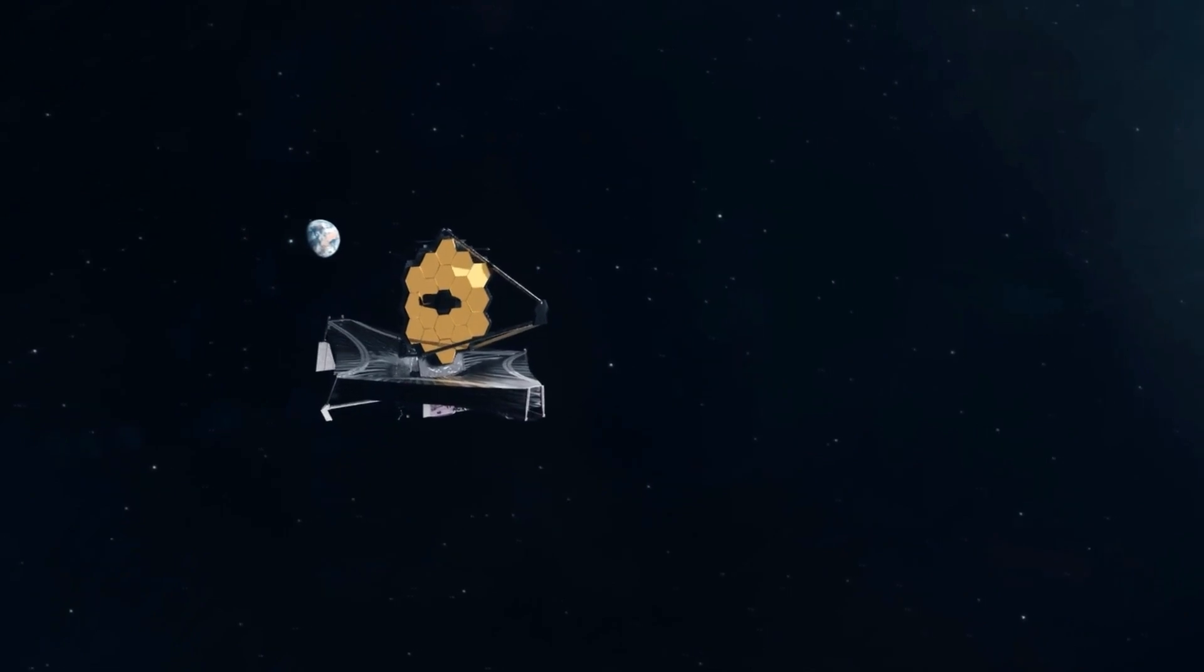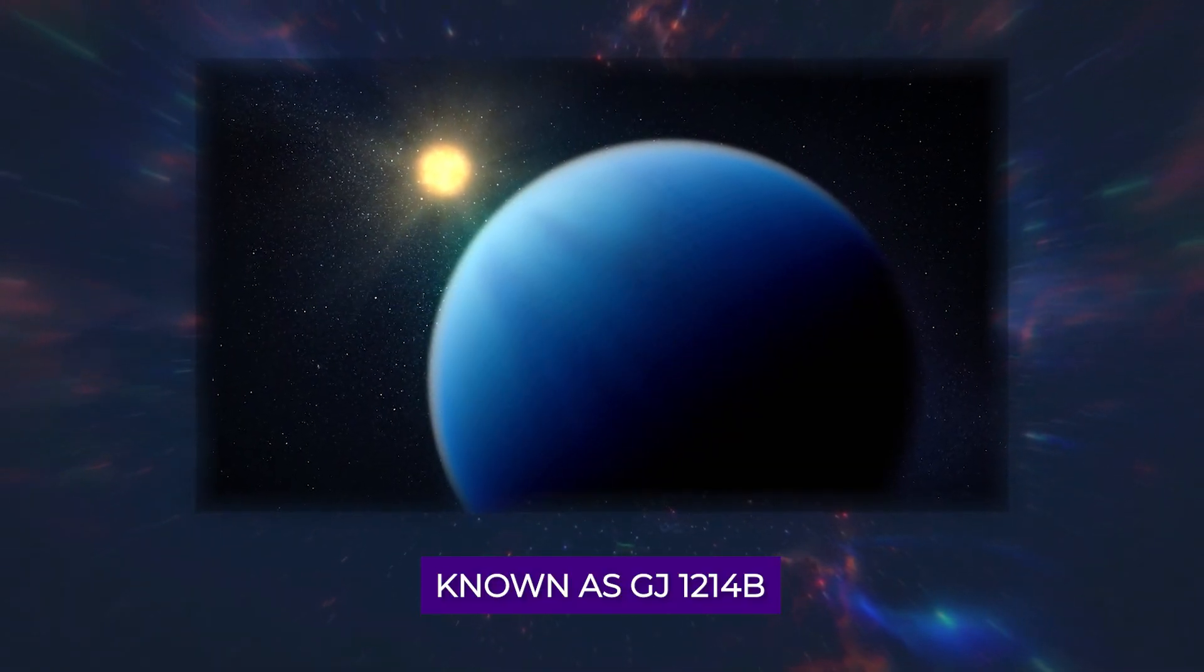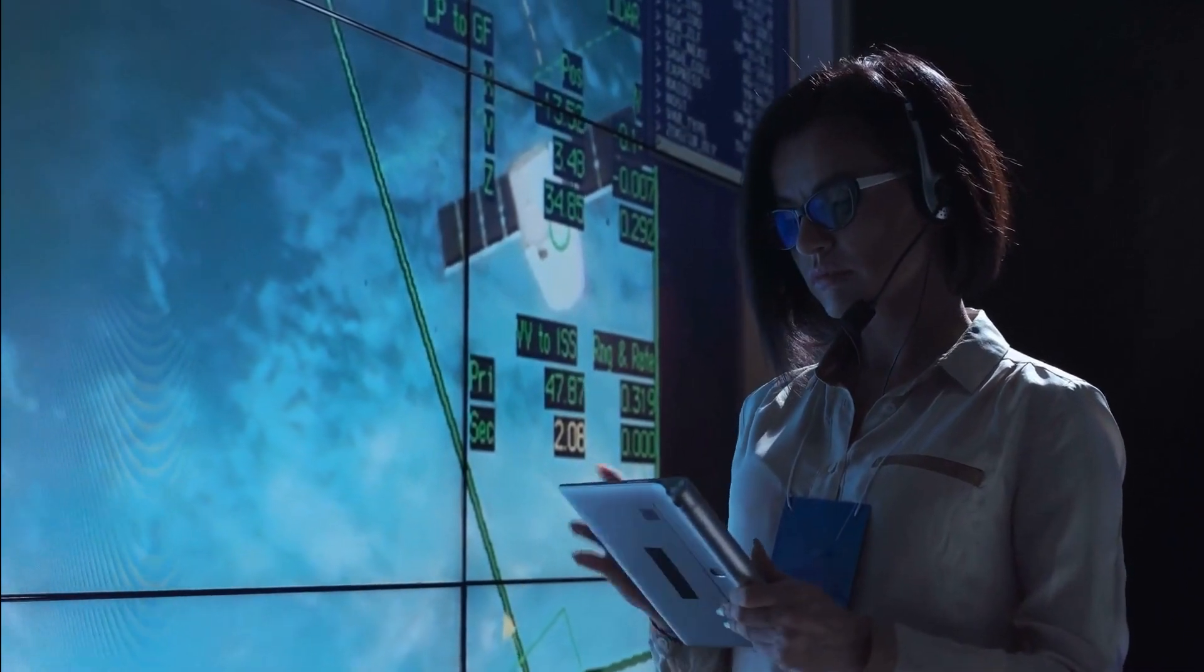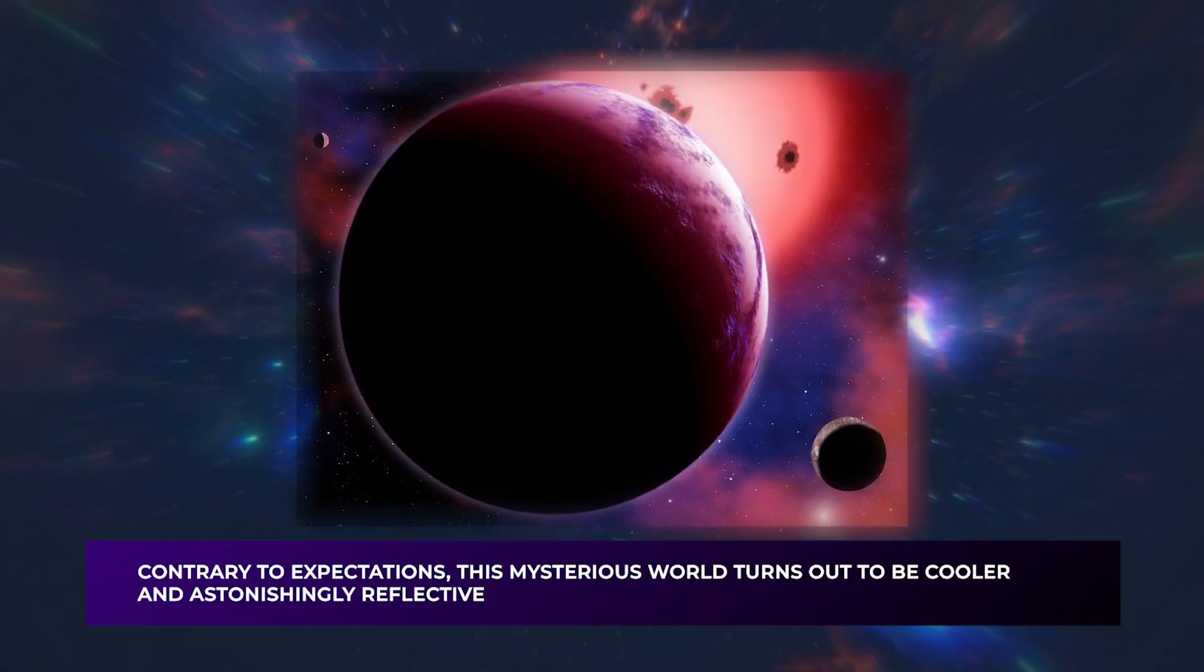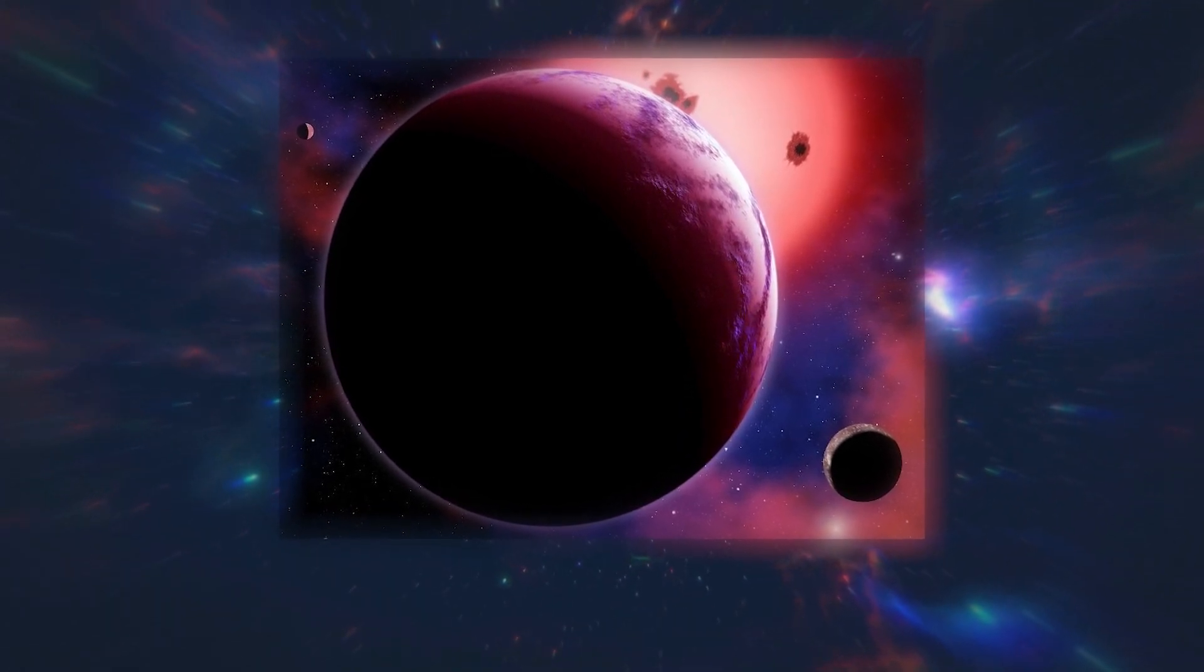The James Webb Space Telescope has uncovered a mysterious planet veiled in clouds, known as GJ-1214b, which has baffled astronomers for years. Contrary to expectations, this mysterious world turns out to be cooler and astonishingly reflective.